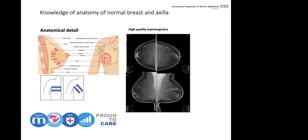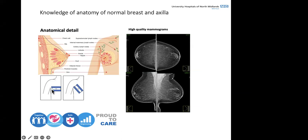Before interpreting mammograms, it's important to understand breast anatomy. Inside the breast, at the back, we have the ribs and chest wall, along with the internal structures of the breast. We do cranio-caudal views and oblique views. The cranio-caudal views are on top and the oblique views are below. Every time a woman — and in a few cases a man — comes, we do two views to see the breast in different planes.